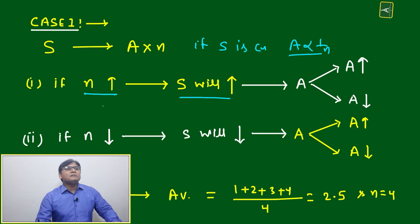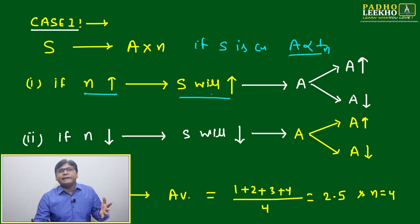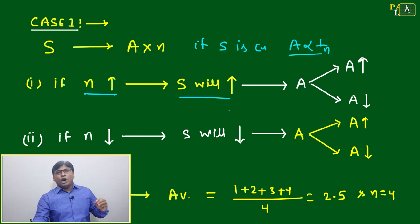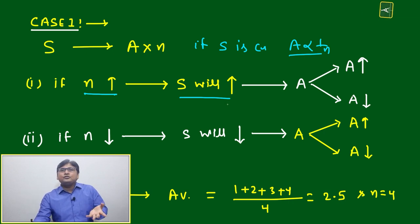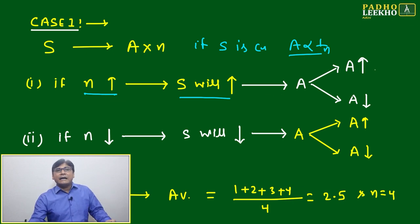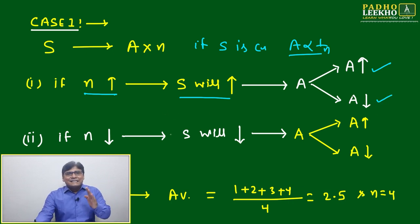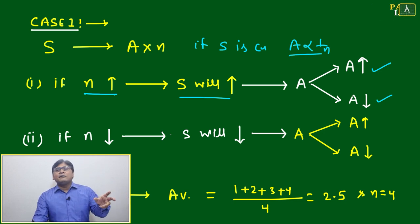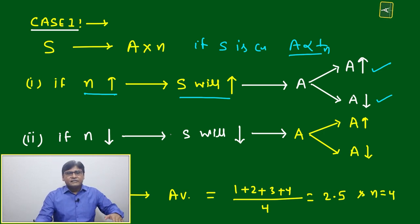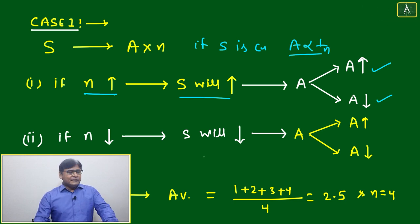If n is increasing, S will 100% increase. But we are not sure whether average will increase or decrease. Average can increase or decrease depending on the value being added. If the value of the new data is less than the existing average, the average will decrease. If the number being added is more than the existing average value, then the average will increase.